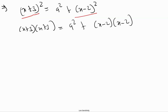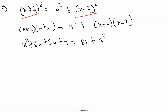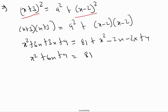9 squared equals 81. Expanding the left hand side gives X squared + 3X + 3X + 9. Expanding the right hand side: 81 plus X squared − 2X − 2X + 4. This simplifies to X squared + 6X + 9 equals 81 plus X squared − 4X + 4.